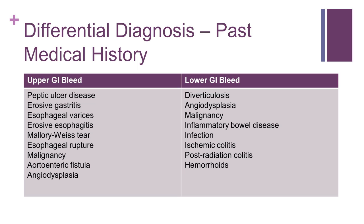Recent use of aspirin or anticoagulants increases the risk of bleeding from any potential source in the GI tract. In a lower GI bleed, if a patient has a known history of diverticulosis, hemorrhoids, or inflammatory bowel disease, that can narrow your search. A history of recent weight loss or a family history of colon cancer could suggest malignancy. A patient with known severe vascular disease will be at increased risk of ischemic colitis.